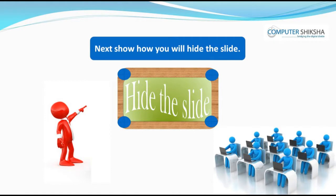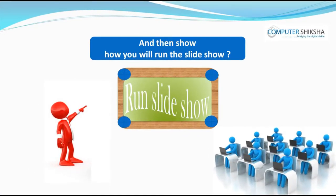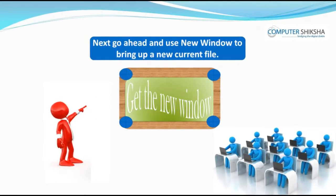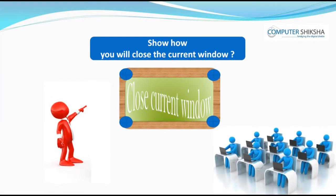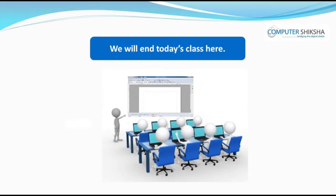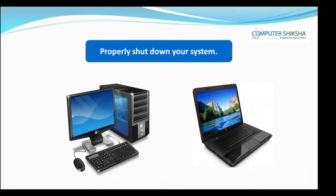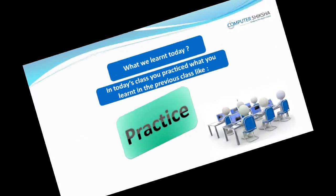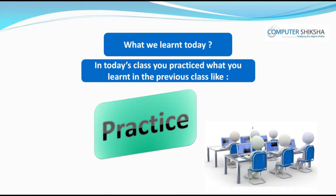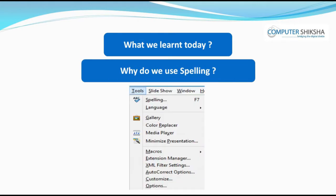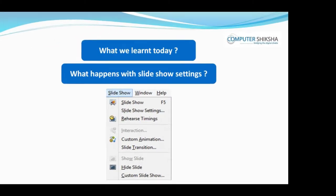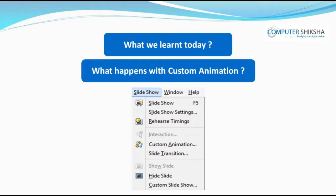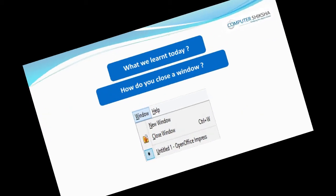Now, show how you will hide the slide and then show how you will run the slide show. Next, go ahead and use new window to bring up a new current file. Show how you will close the current file. Today's class ends here. Close your file and properly shut down your computer. In today's class, you practiced what you learned in the previous class, like why do we use spelling, why do we use gallery, how can we view our slide in a larger or full screen, what happens with slide show settings, what happens with custom animation, how do you hide a slide, how do you bring up a new window, and how do you close a window. Thank you.